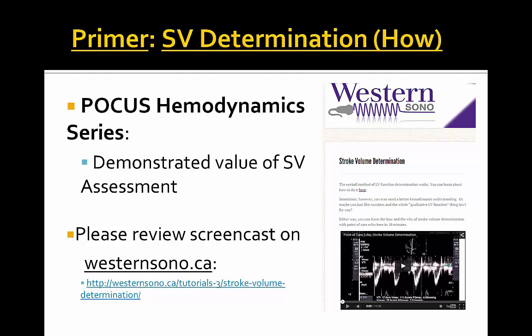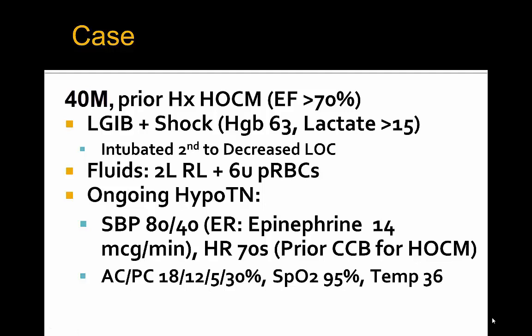The case involves an 81-year-old gentleman with known hypertrophic obstructive cardiomyopathy with a previous EF of hyperdynamicism greater than 70%, who presented with a lower GI bleed and shock. His hemoglobin had drifted down to 63 and his lactate was greater than 15. The patient was intubated secondary to decreased level of consciousness, and IV fluids were administered with two liters of Ringer's lactate and eventually six units of packed red blood cells.